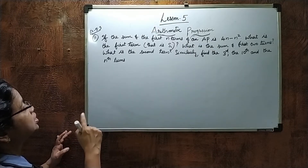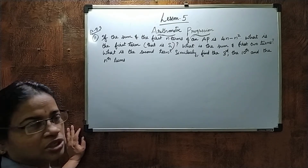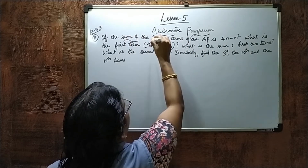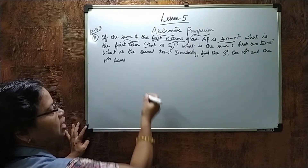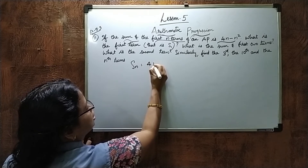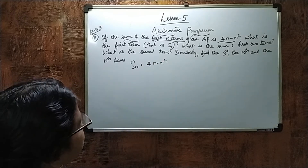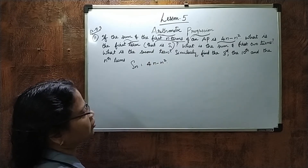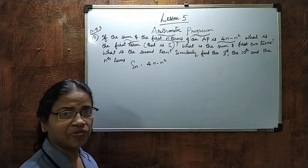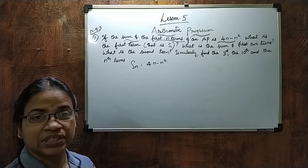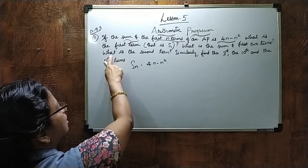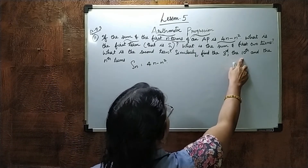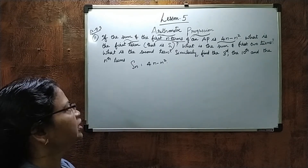This is exercise number 5.3, 11th question — an important one. If the sum of the first N terms of an AP is 4N minus N squared, find the first term, sum of first two terms, second term, third term, tenth term, and nth term.